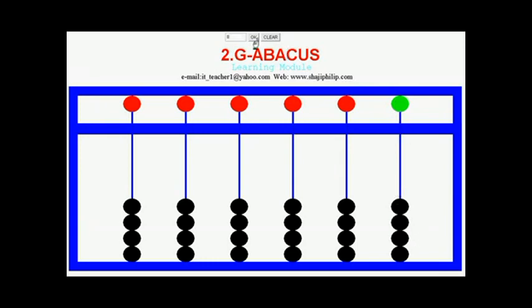And finally for nine, five plus four. That means for setting nine, we have to move the heaven bead down and four earth beads up. Totally five plus four, we will be getting a value nine.